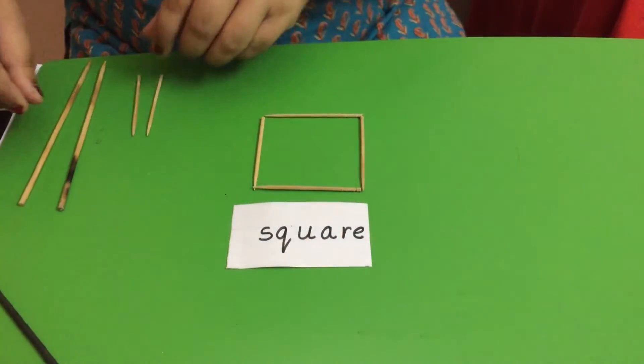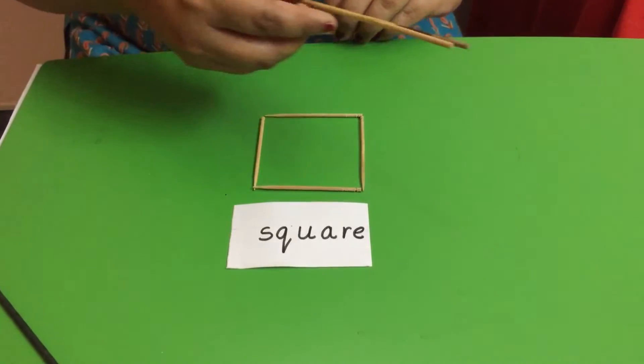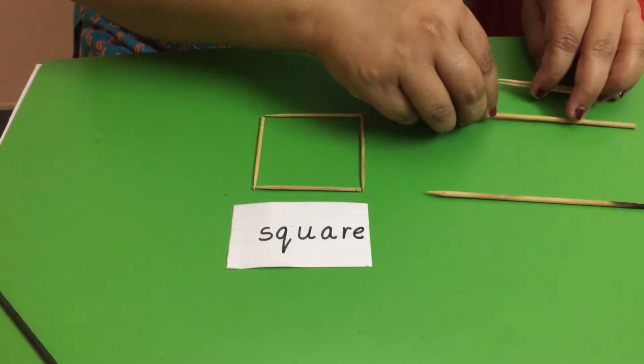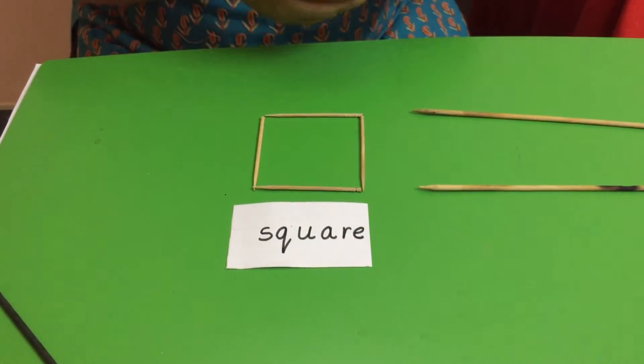Now let us see rectangle. As I said, rectangle has two long sides. These sticks are long which are opposite to each other.